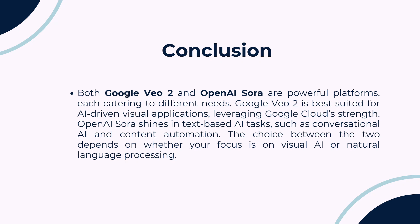In conclusion, both Google VO2 and OpenAI Sora are leading platforms in their respective areas. Google VO2 is the top choice for image and video AI, while OpenAI Sora excels in text and conversational AI. Your choice ultimately depends on the specific needs of your project, whether it's visual AI or natural language processing.